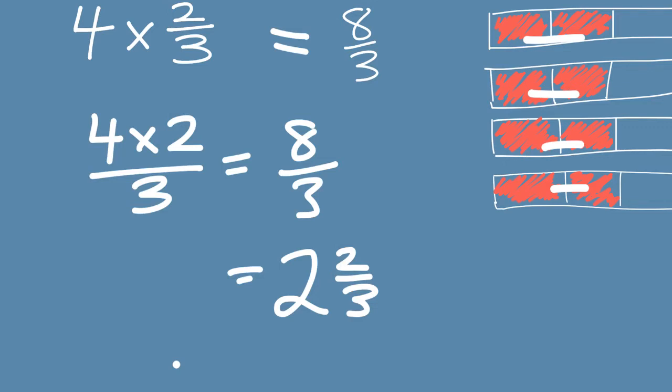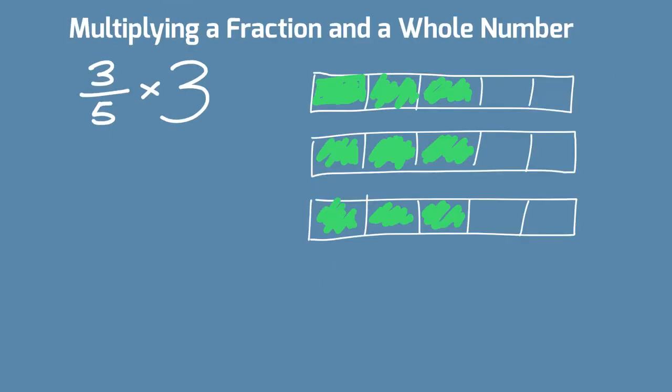Let's try one more. Here, I've got 3 fifths times 3, or in other words, 3 fifths drawn 3 times. So, again, let's count up our 3 fifths.